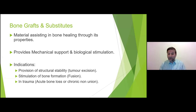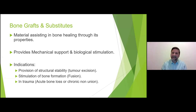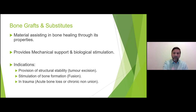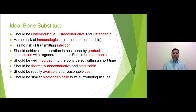Another indication is when you've done a fusion and the bone quality in that area is poor, or there's a big gap that if you compress the bone the patient will be shorter — so you want to fill that gap with something that will turn into bone later. In trauma, either because of acute bone loss or chronic non-union, you want to fill that gap. These are the scenarios that can come up in the exam where you'll mention bone graft.